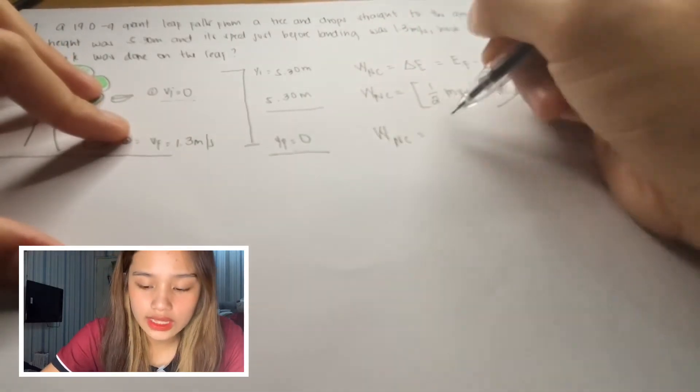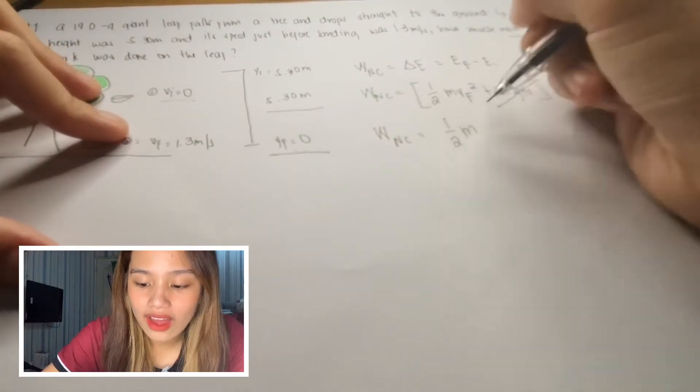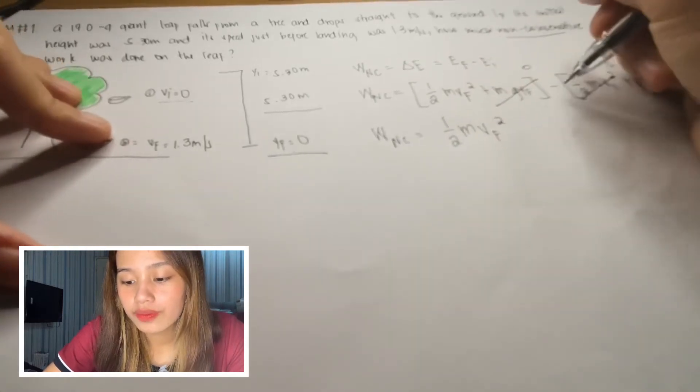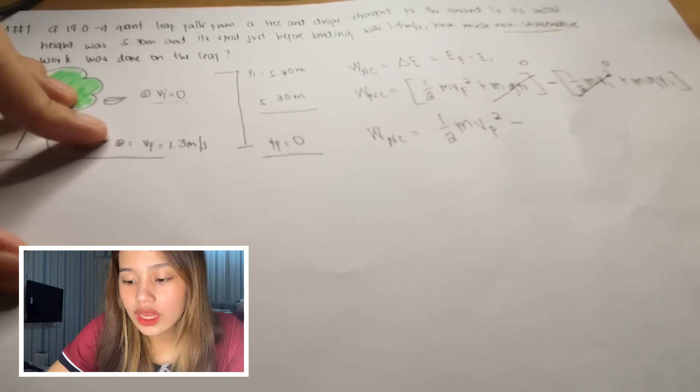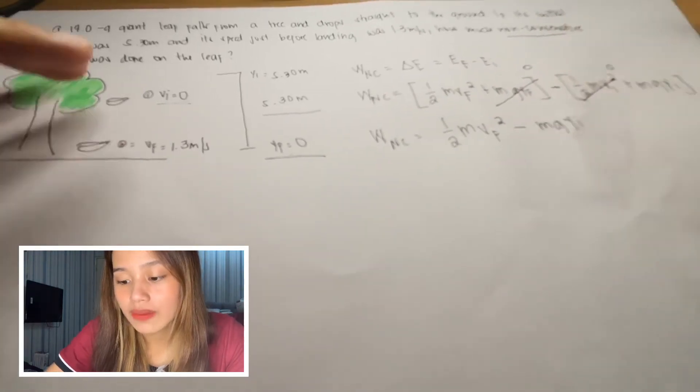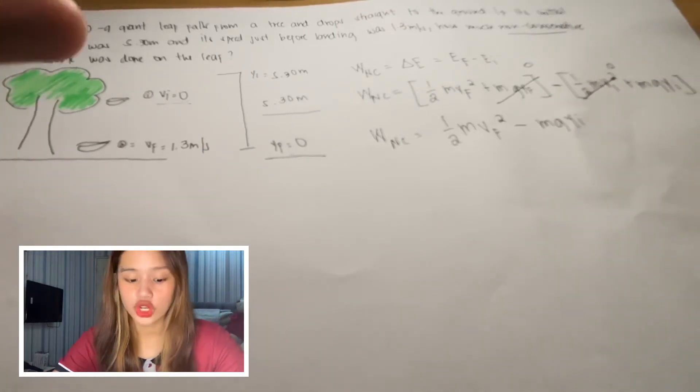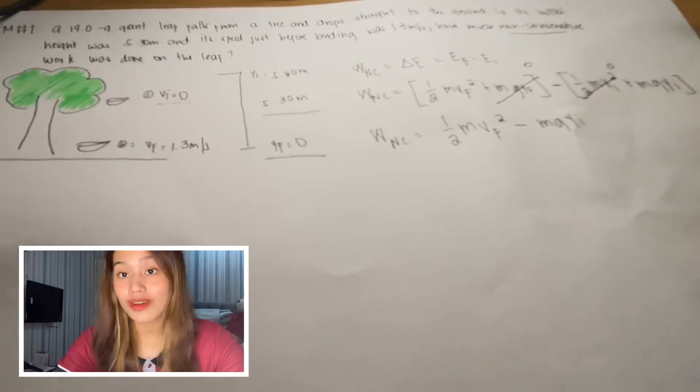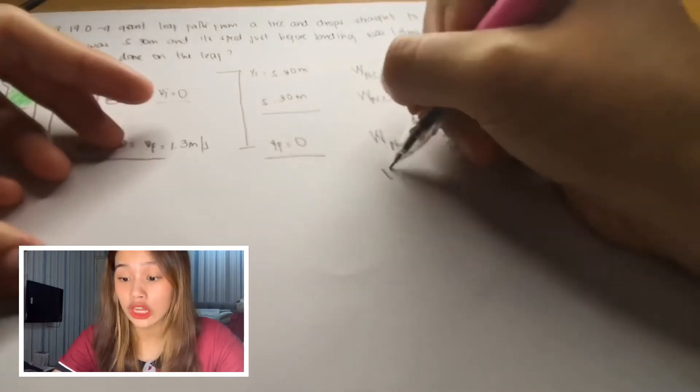So what remains is 1/2 m v_f squared. Since this is negative, there, negative m times g times the initial position. Since we already have the given values, we know all these values. So we just substitute.